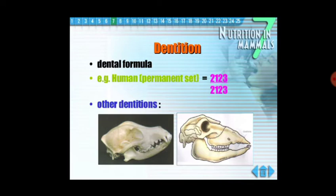We studied about the dental formula of the human permanent set, which was 2-1-2-3. The dental formula is described by starting from the center and moving in the backward direction on both sides — left as well as right. Moving from center to behind, we are having 2 incisors, 1 canine, then 2 premolars, and then 3 molars.